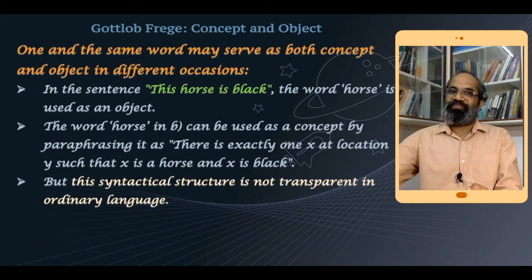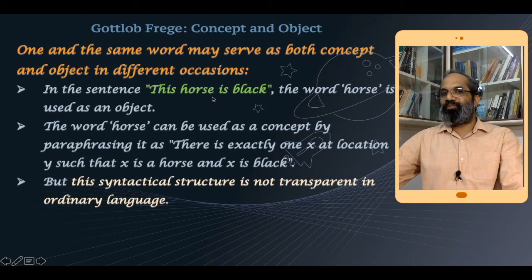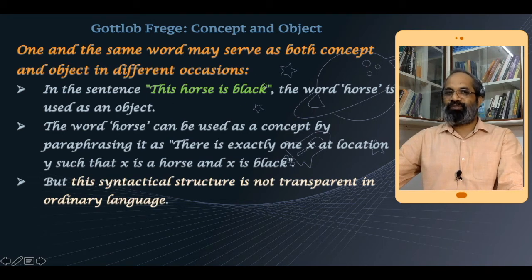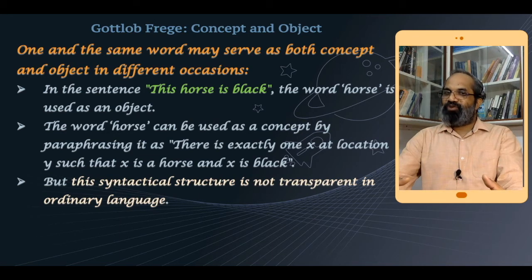The word 'horse' can be shown to function as a concept by paraphrasing a sentence using quantification. For example, 'This horse is black' can be symbolized as: 'There is exactly one x at location y such that x is a horse and x is black.' In this paraphrase, 'horse' appears as a predicate. However, this syntactical structure is not transparent in ordinary language — ordinary language often conceals the underlying grammatical structure of the sentence.